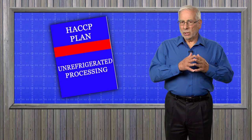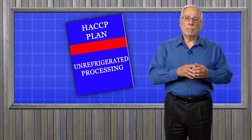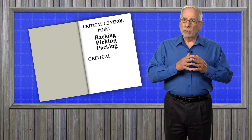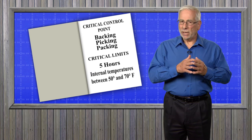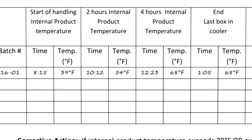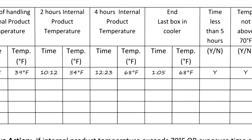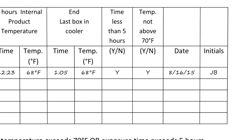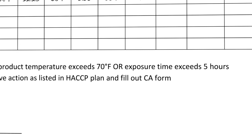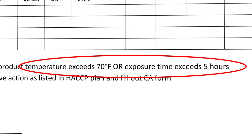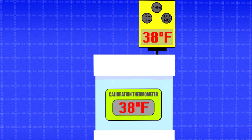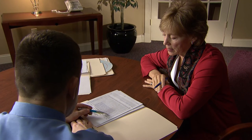Here's what this unrefrigerated processing critical control point looks like in the HACCP plan. The critical control point includes backing, picking, and packing. The critical limits are five hours when the internal product temperatures are between 50 and 70 degrees Fahrenheit. The monitoring procedure is to visually observe and record time using a clock and product internal temperature using a thermometer every two hours. If the cumulative processing times and/or temperatures exceed the critical limits, the corrective action is to chill, hold, and evaluate the product for safety, and modify the process. Verification includes thermometer calibration, accuracy checks, and a weekly review of monitoring records.